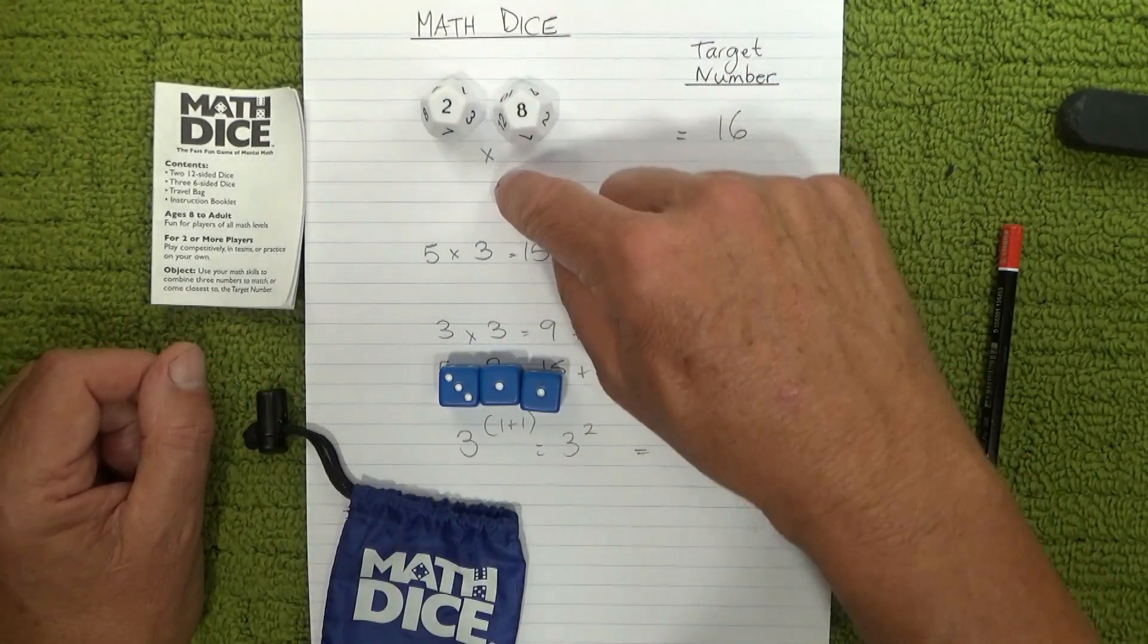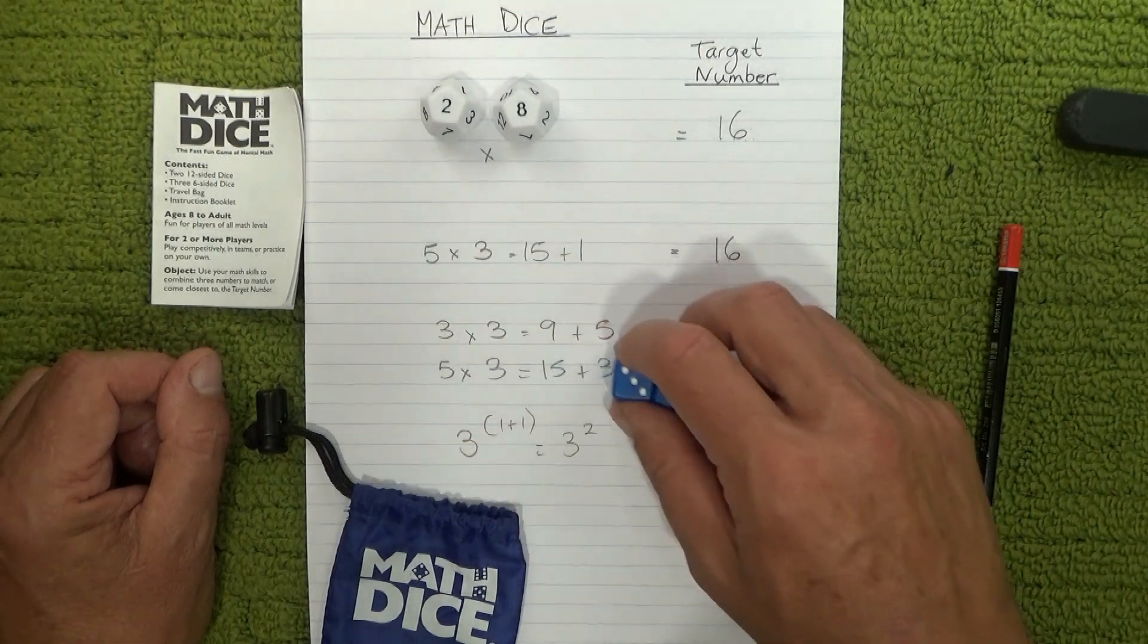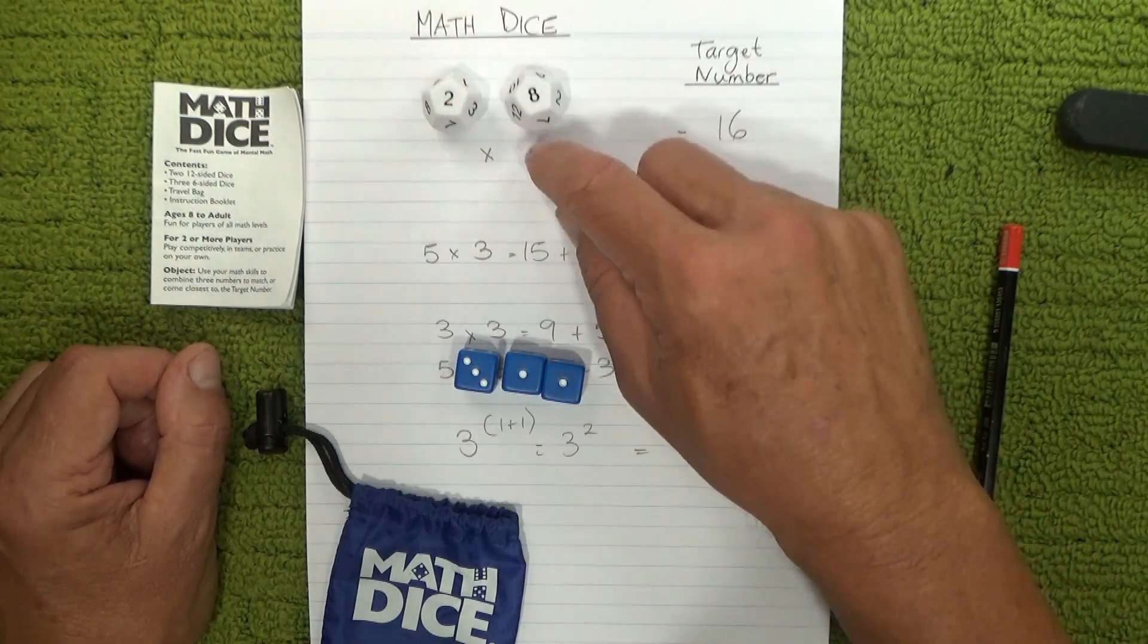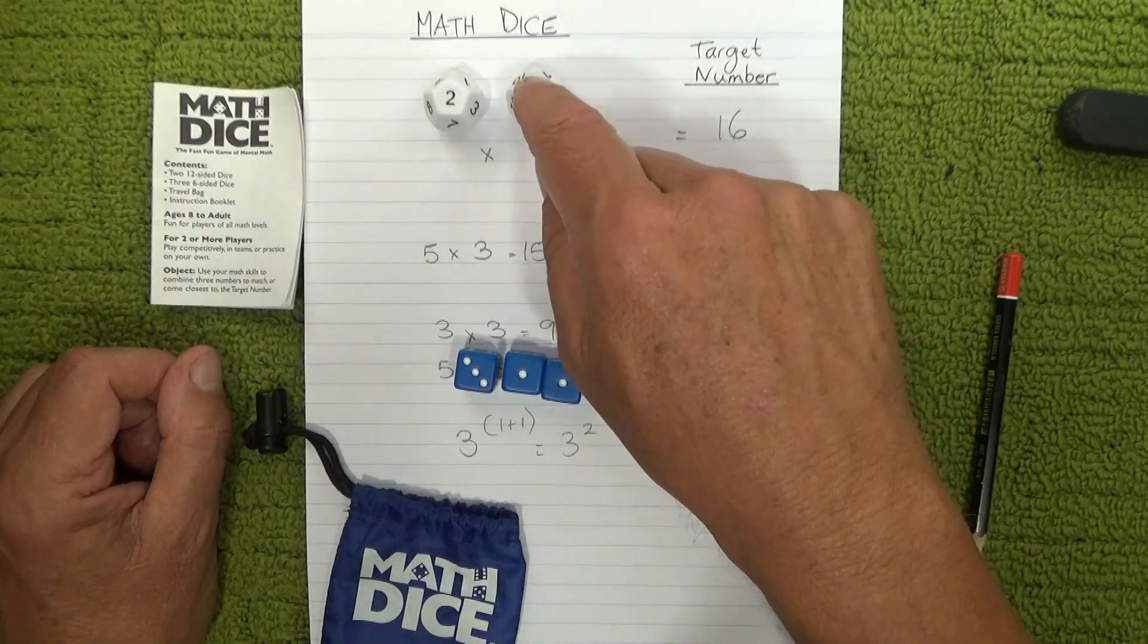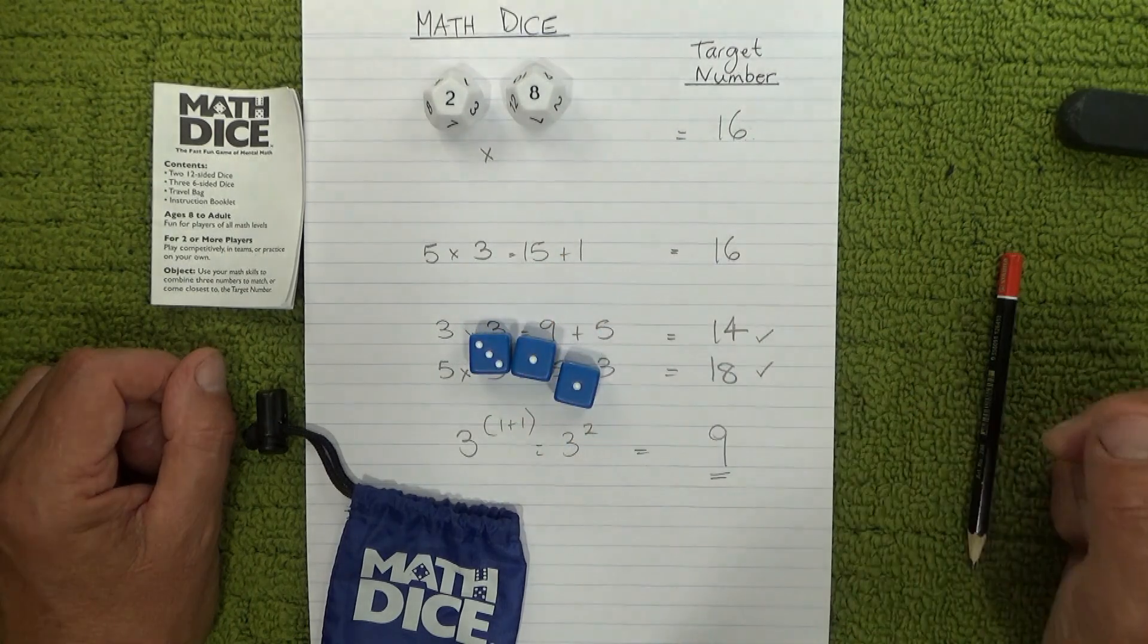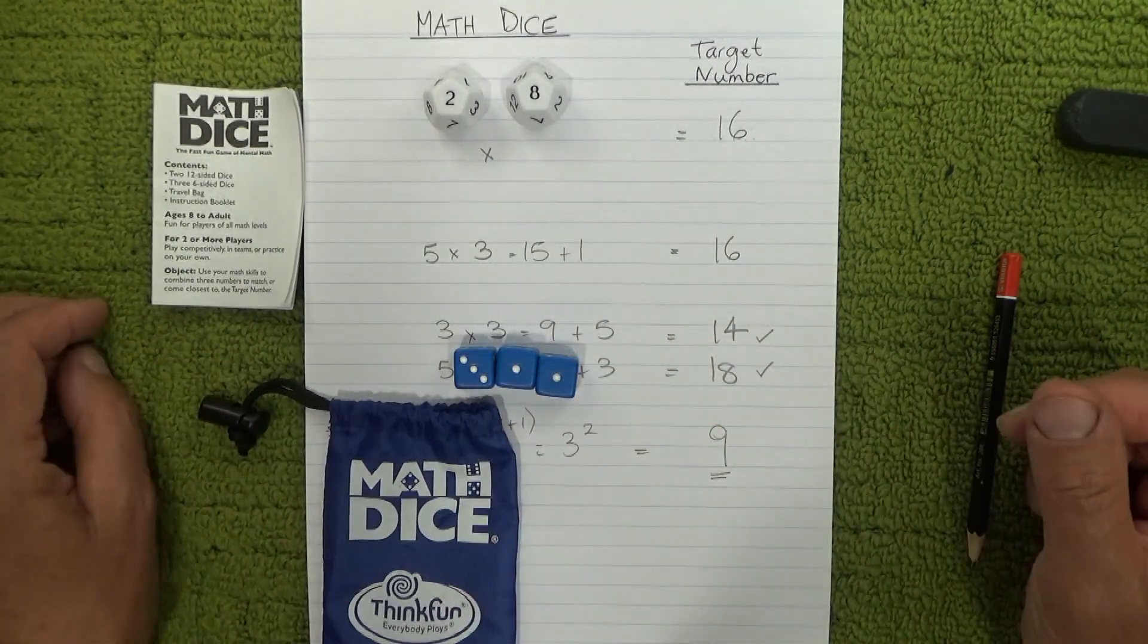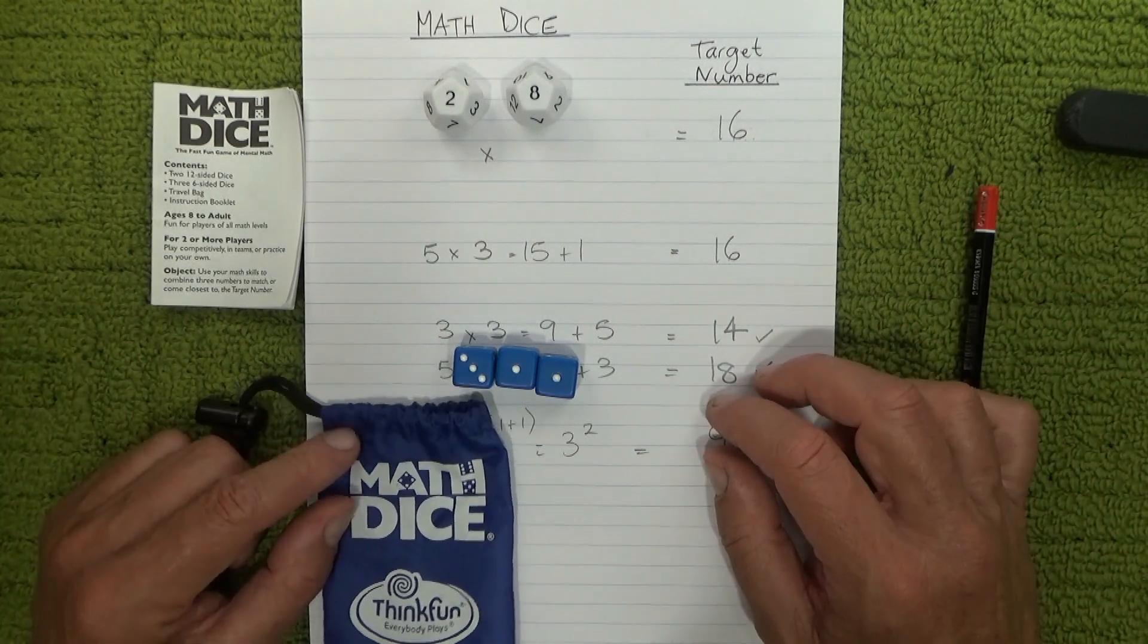So obviously we're doing a lot of multiplications and to the power of to get the answer. If you're playing with people that might prefer something a little bit easier, you could just do additions. Two plus eight is 10, and then just do addition and subtractions with the numbers down here in the dice. So you can adjust the rules to suit the people that are playing this game.